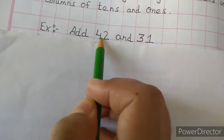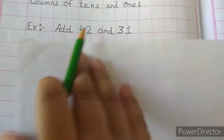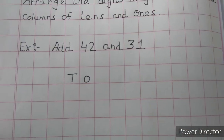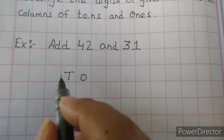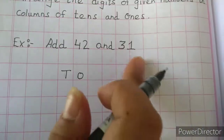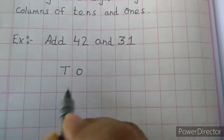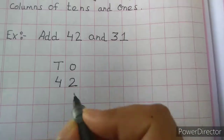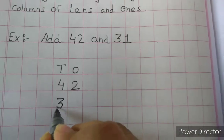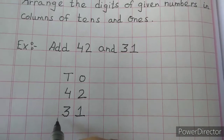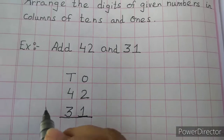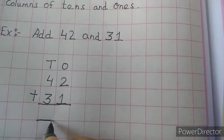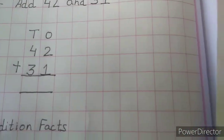Suppose we have to add 42 and 31. First, we put the labels of ones and tens, then we place the digits in the correct columns. For 42, the 2 comes under the ones column and the 4 comes under the tens column. Similarly for 31, the 3 comes under the tens column and the 1 comes under the ones column. After this we draw a line and put the plus sign, and we start doing addition from the rightmost corner — that is, the ones column.